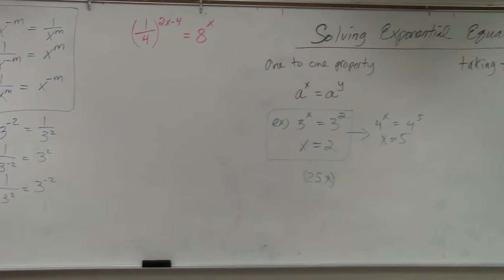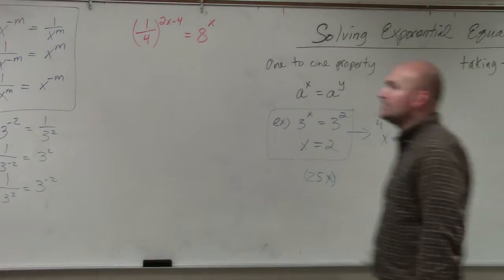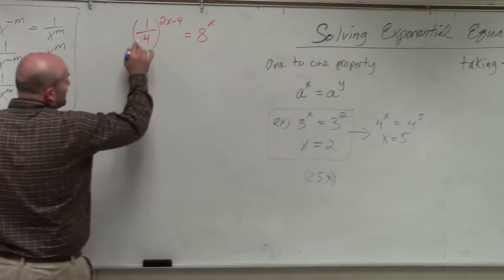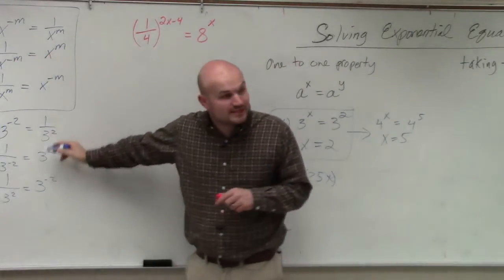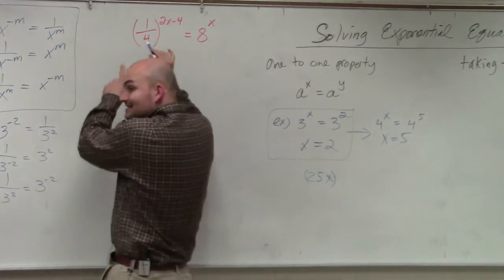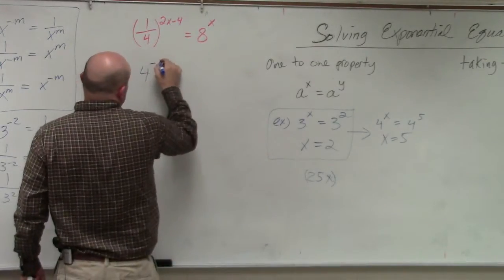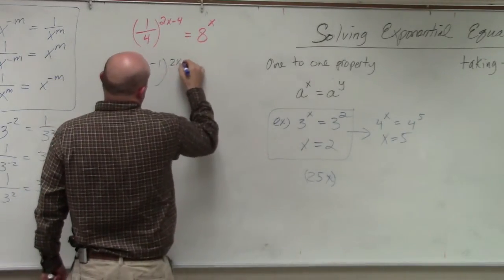4 to the negative 2x. Let's take a look. If you're looking at this, I can rewrite. If I have 1/4 and I want to use one of these properties — if I want to get this not to be a fraction — I would rewrite this as 4 to the negative first power.